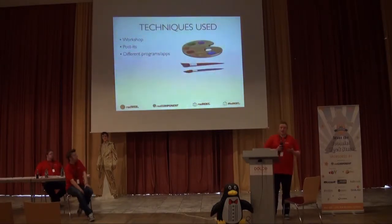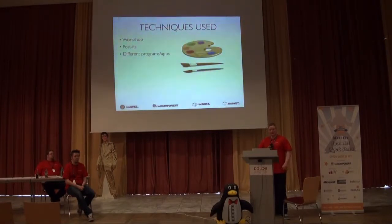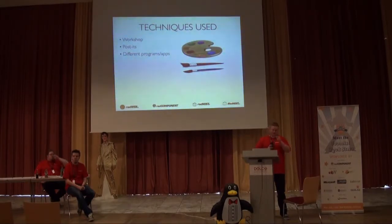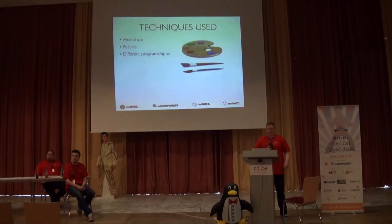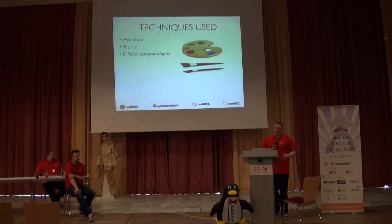There are many techniques to make a wireframe. The most simple one — something you can use too — is post-its. Take a bunch of post-its, write element names on them, place them on the table, and rearrange until it makes sense. Take a photo with your phone, then move on and do all the special pages you need to design. When done, you have all the information needed to create the real wireframe.